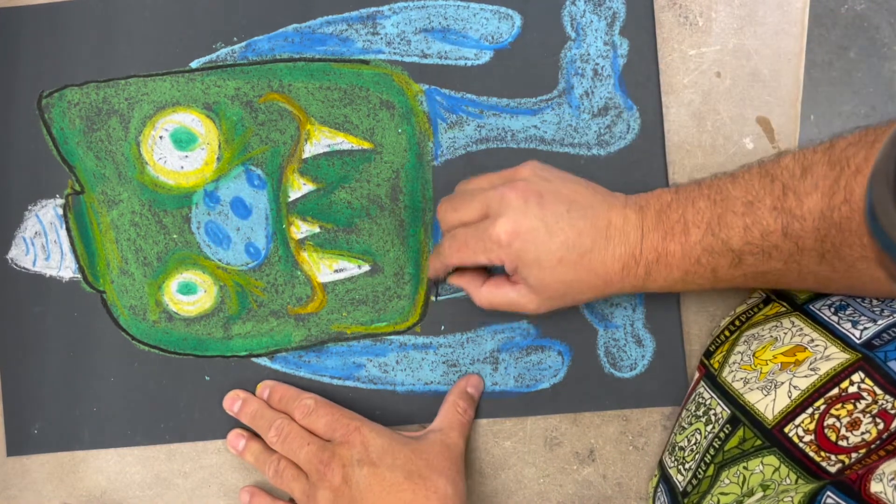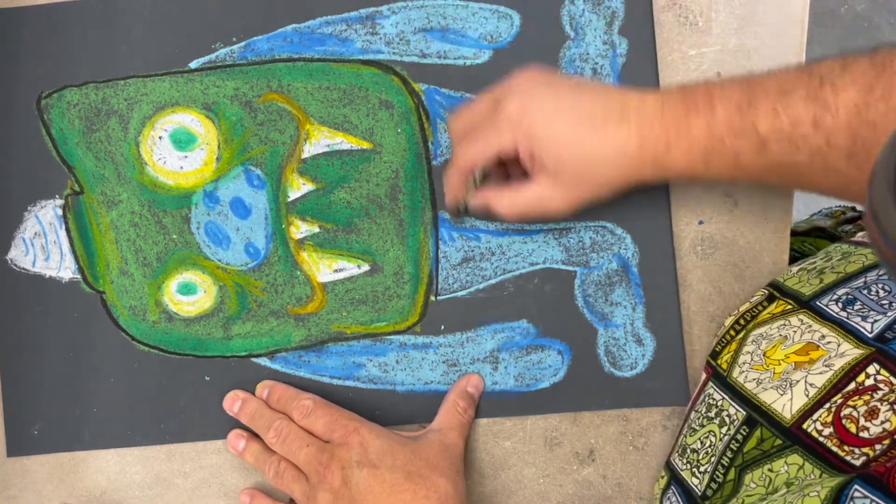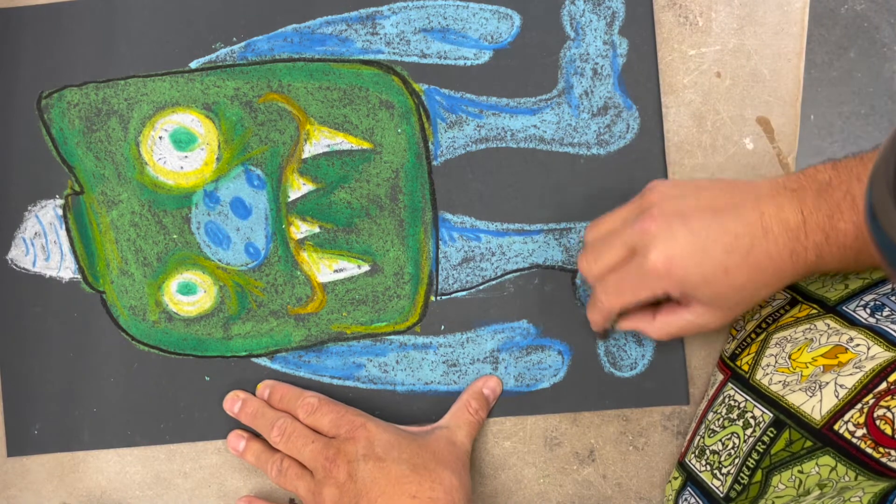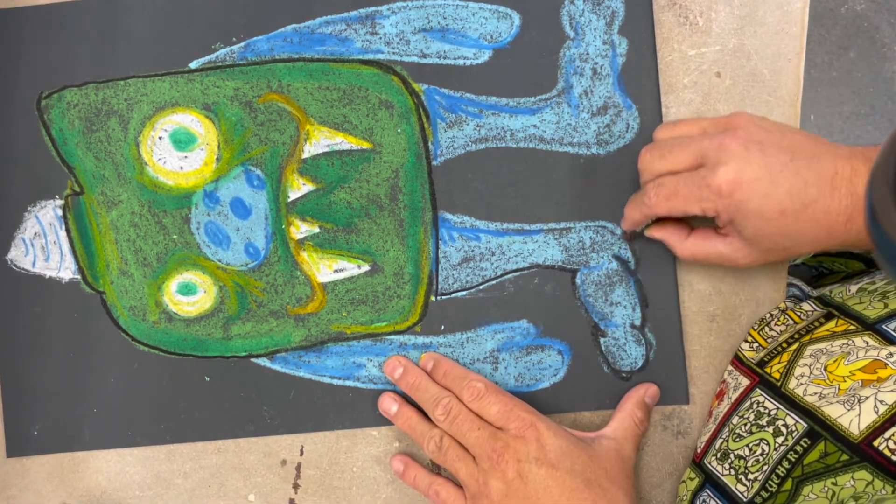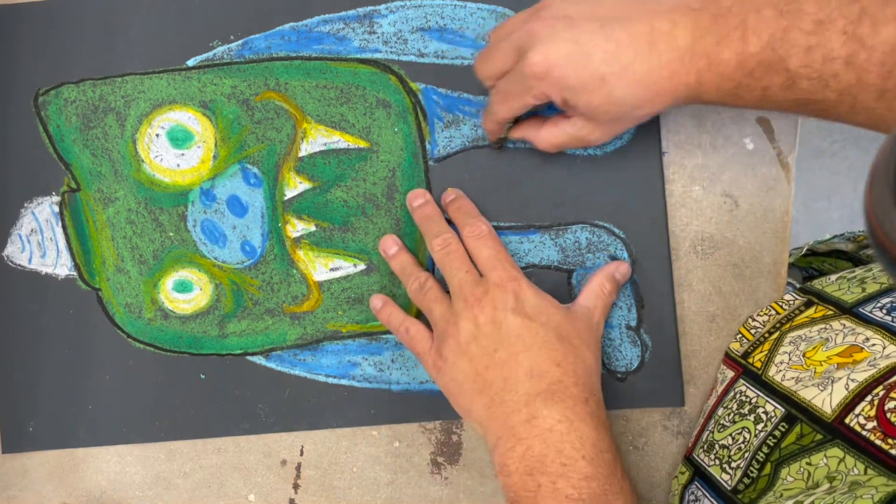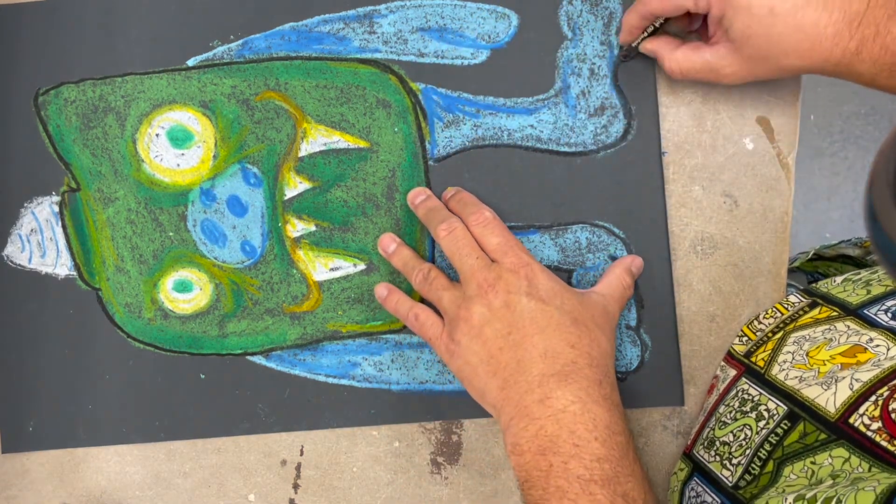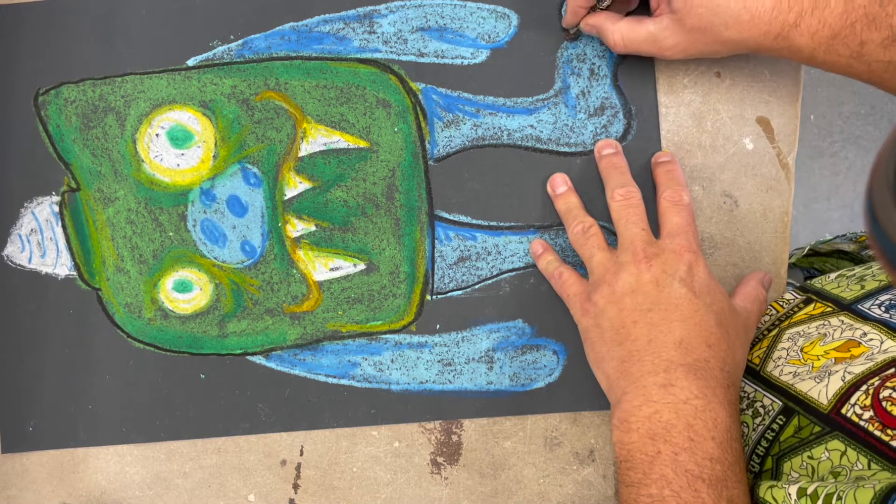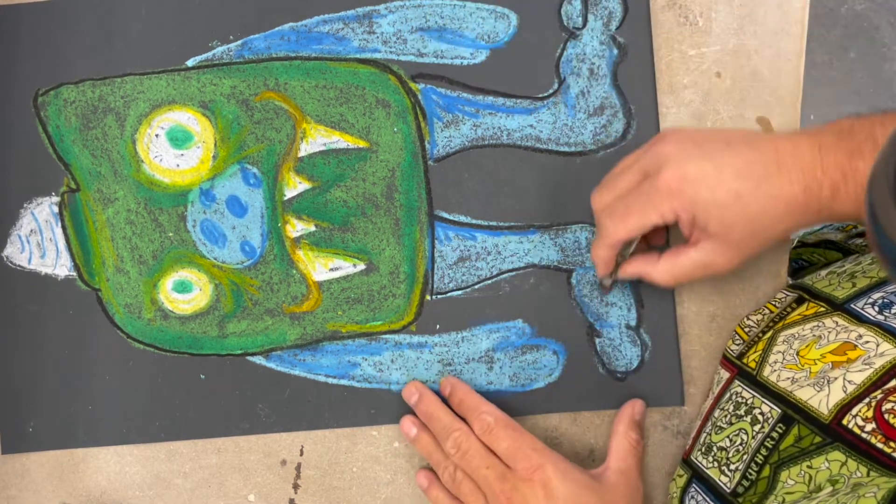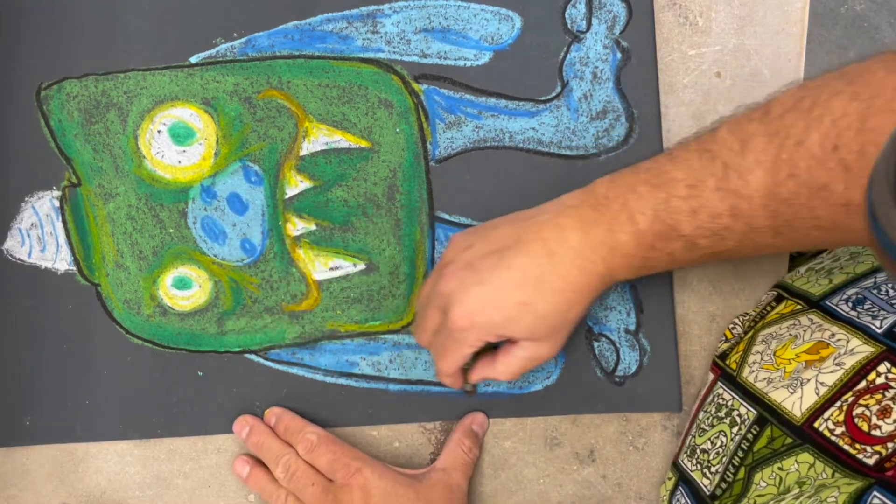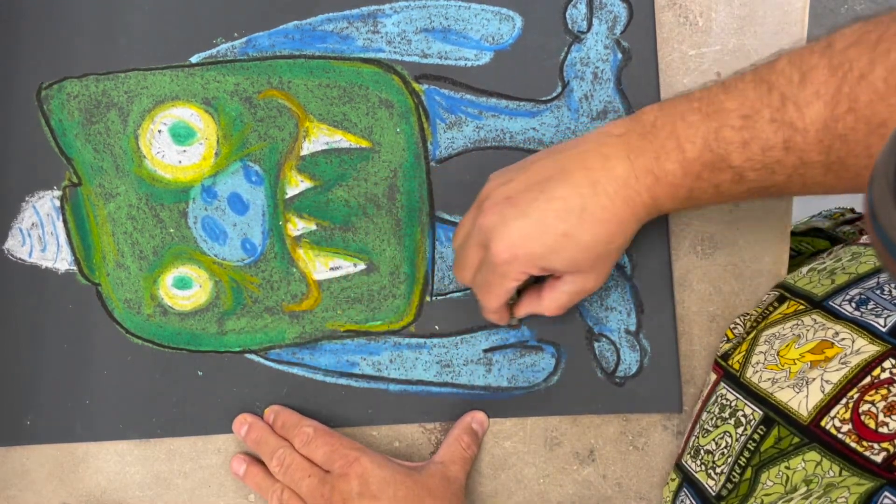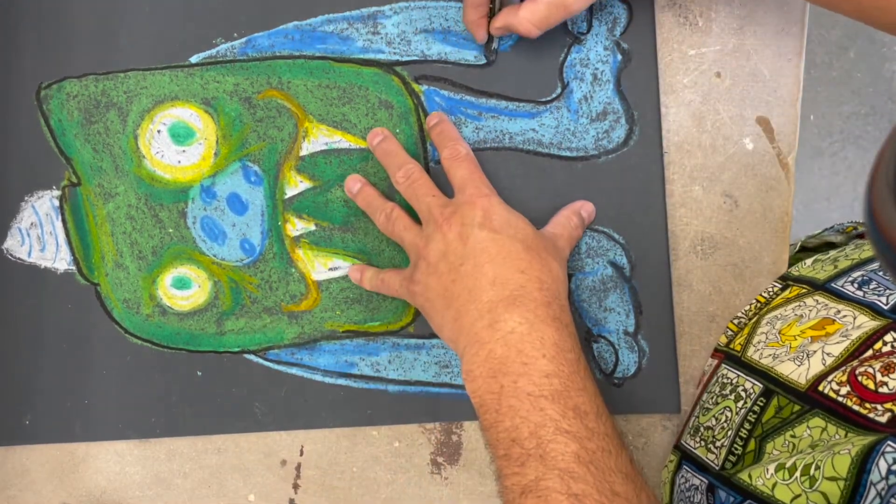This will make those colors pop out a little bit more on that black paper, and this will make sure that if I went out of the lines, it'll still make it. I can even go in and add some more details there if I remember too.